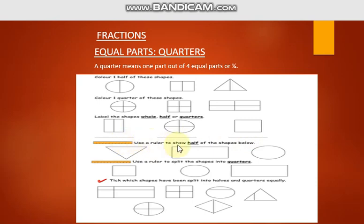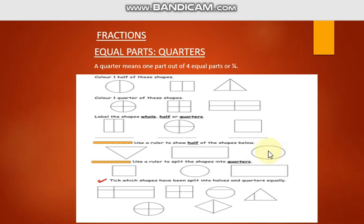The next question is: use a ruler to show half of the shapes below. You will use the ruler and draw a line to cut each shape into two equal parts. You can divide the shape vertically or horizontally.